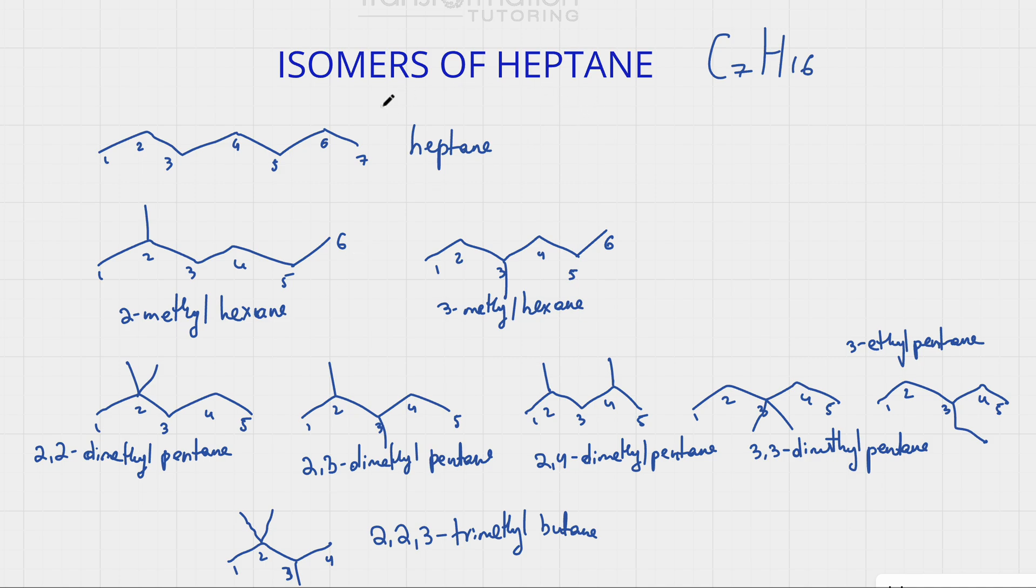So heptane has 9 isomers: 1 with the heptane parent chain, 2 with the hexane parent chain, 5 with the pentane parent chain, and then there is the last one with the butane parent chain.